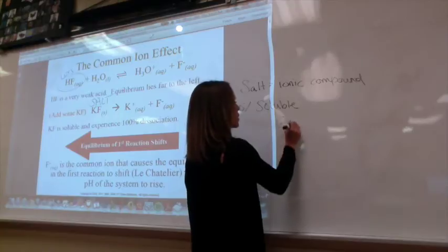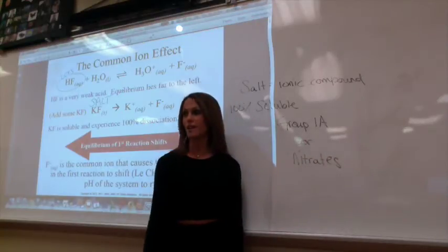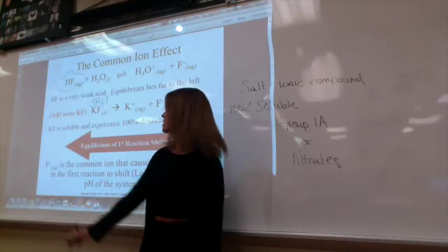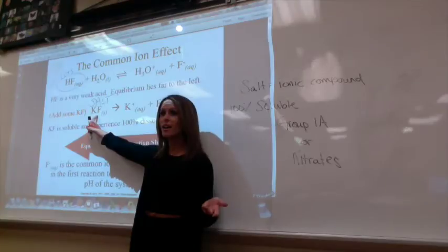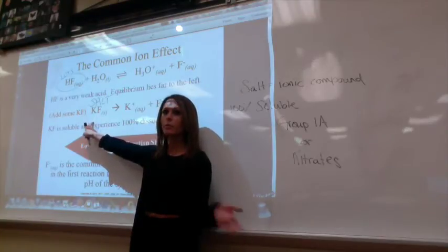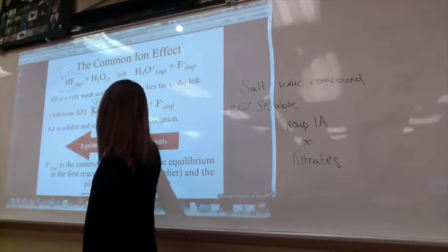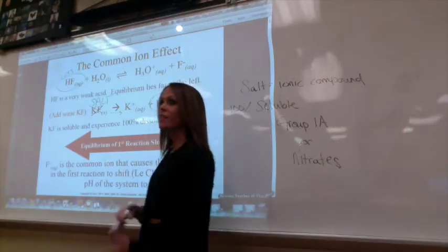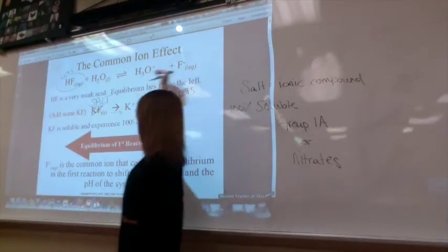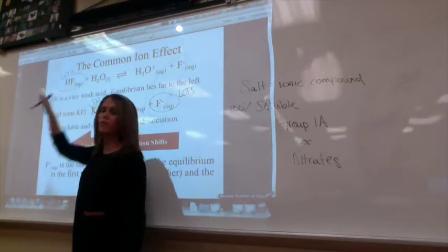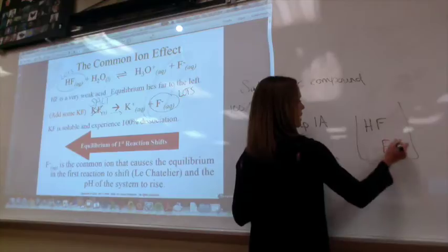My salt has to be soluble — Group 1A or nitrates. So if I put in the conjugate base as a salt, I can put in NaF, KF, or LiF. They're completely soluble and they'll dissociate 100%. There's none of the solid left, but there's lots of the anion in there. This is the common ion effect right here. It drives the weak acid equilibrium back to the left even more, which means I have lots of HF in there and lots of F-.